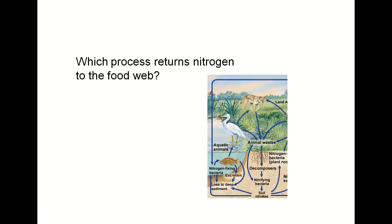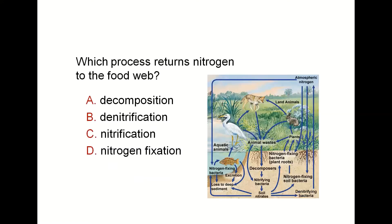Which process returns nitrogen to the food web? This process is called nitrogen fixation. Nitrogen fixation is performed by a kind of bacteria called nitrogen fixers, living in the nodules of legume plants like beans. These bacteria change nitrogen dissolved in the soil into a usable form that plants can use to make their own protein and grow — a very important process.